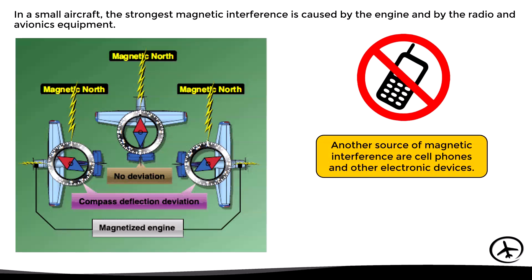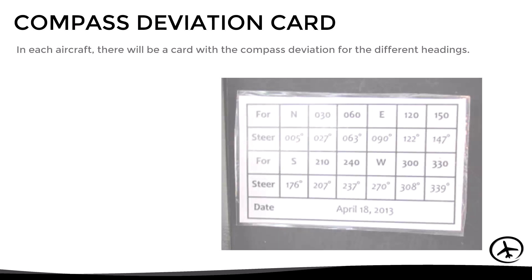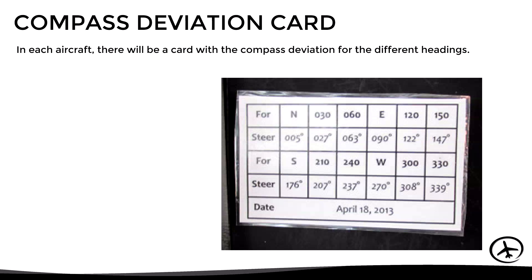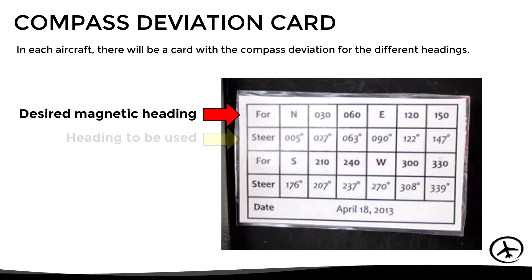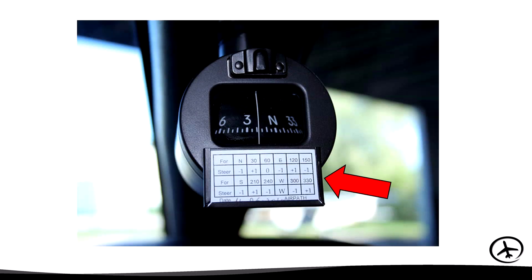There are also other sources of magnetic interference, such as cell phones and other portable electronic devices aboard the aircraft. To know the compass deviation for a particular aircraft and heading, there is the compass deviation card, which includes deviation information for different headings. In this card, the upper row shows the desired magnetic heading, while the lower row shows the corrected heading to be used accounting for compass deviation. The difference between these two values is the deviation angle.